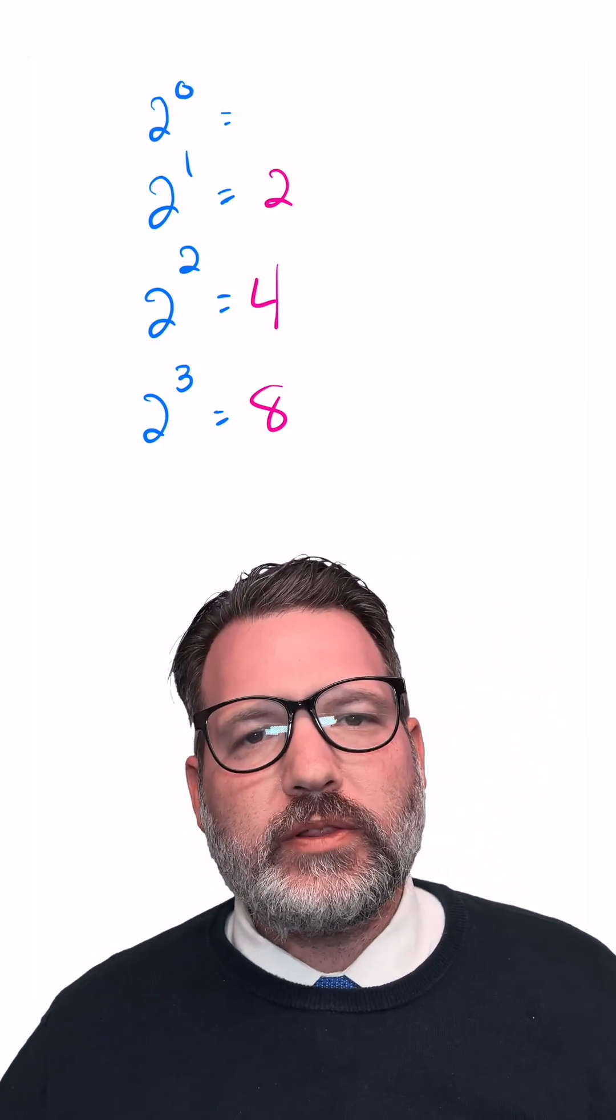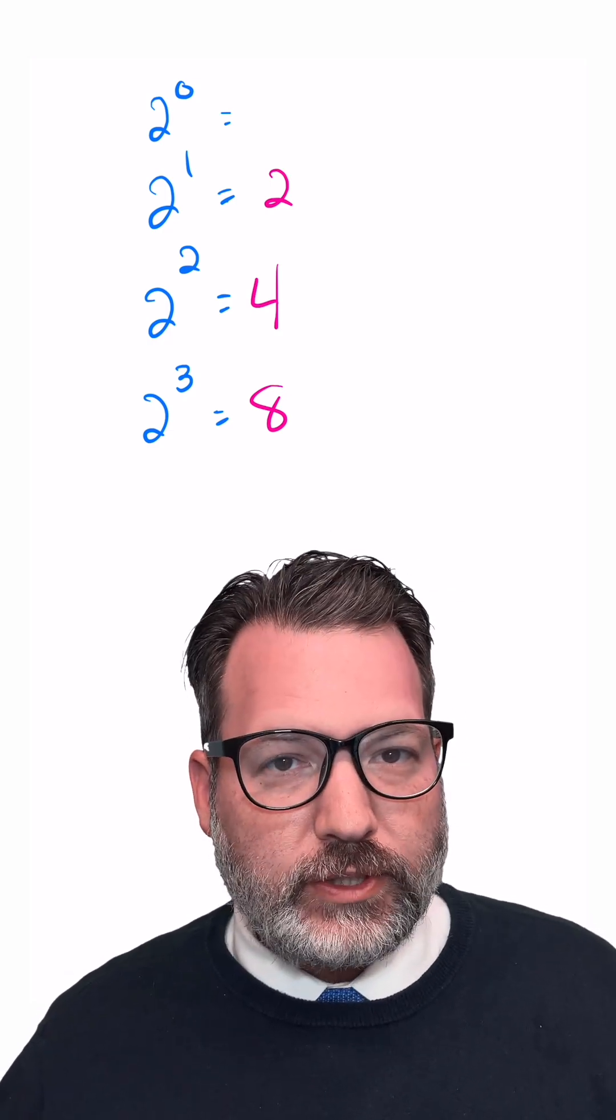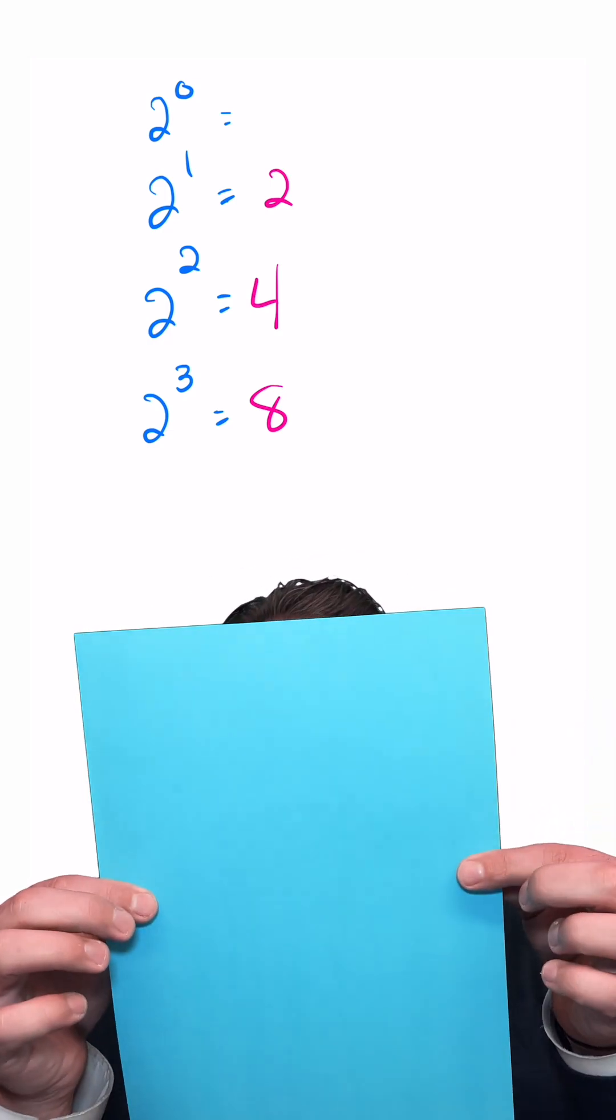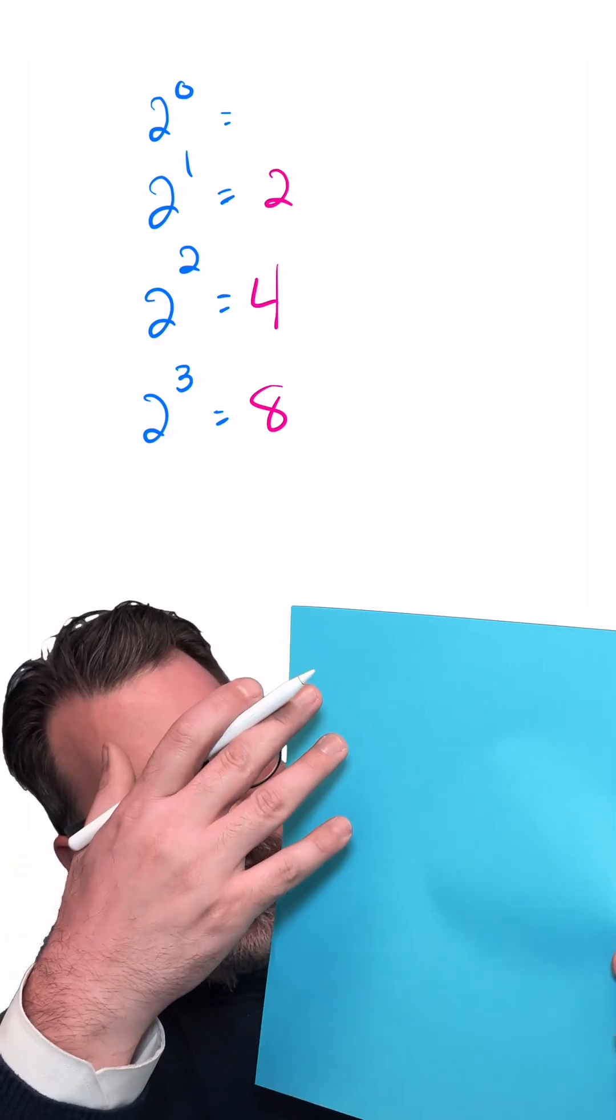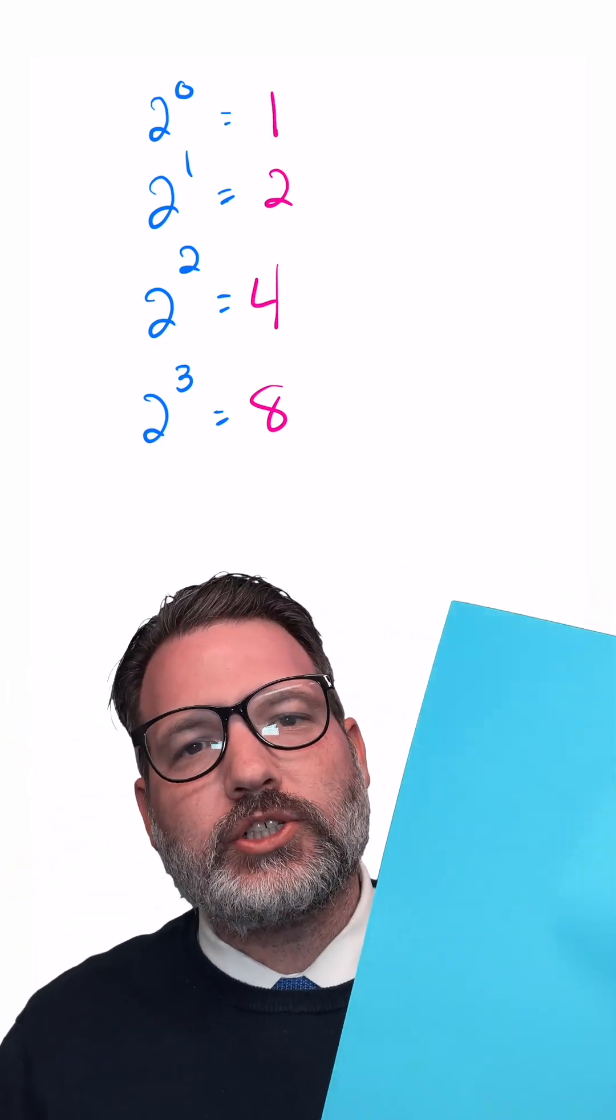But what if we wanted to know what 2 to the 0 was? We would need to look at a piece of paper that had 0 folds in it at all, and if we looked at such a piece of paper, we would see there are not 0 sections on this sheet of paper—there is still precisely one large section to this piece of paper.